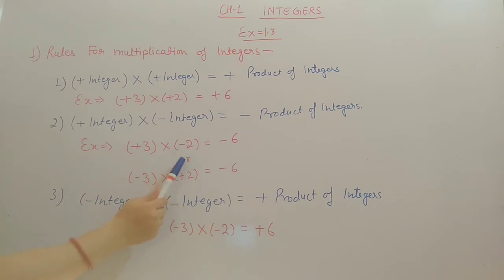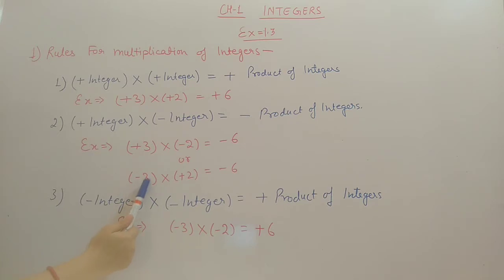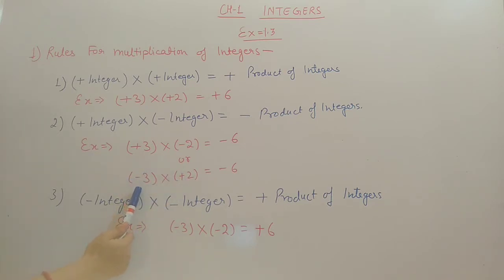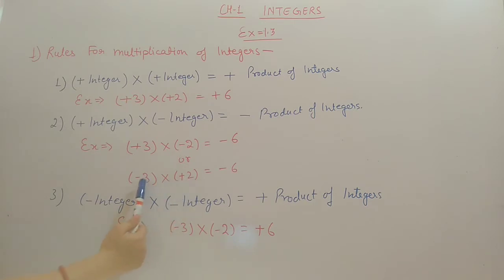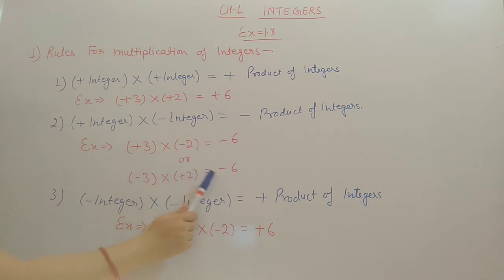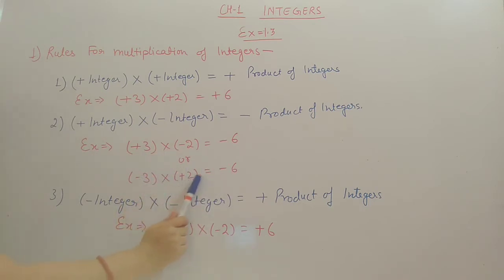It may be the negative integer in first place. For example, minus 3 into plus 2 — here the minus integer is at first place and positive at second place. So in this one also you have to use the same rule. Minus into plus will become minus, and 3 into 2 will become 6, giving minus 6.